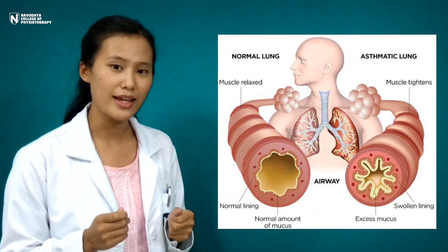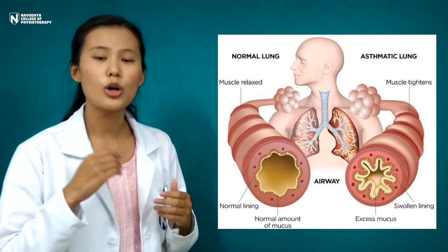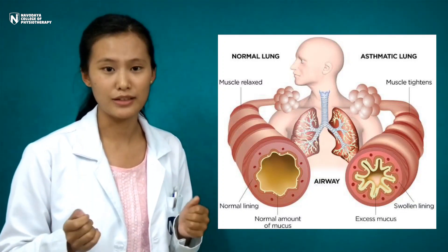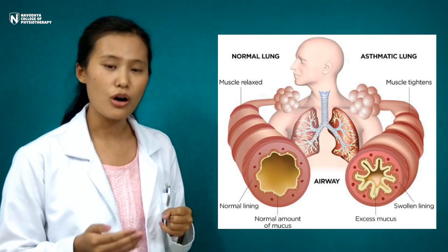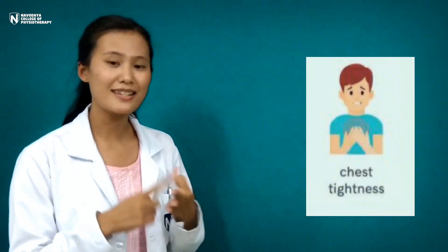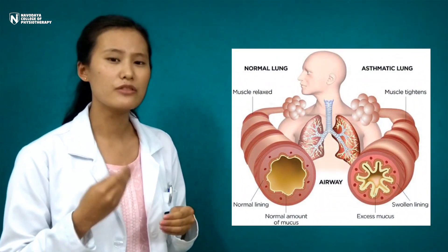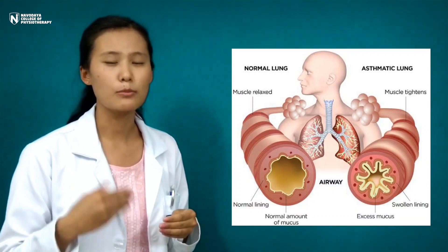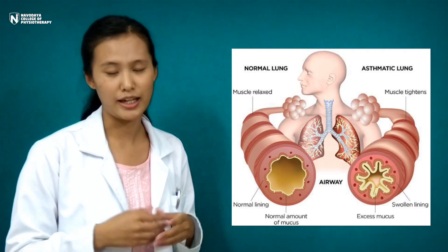Asthma is a chronic inflammatory condition of the airways in which we can see hyperresponsiveness of our airways to a wide range of stimuli that leads to bronchial inflammation. It is associated with recurrent episodes of cough, wheezing, chest tightness and breathlessness that are often worse at night or in early morning. The airflow limitation is often reversible with treatment, but in case of some chronic asthma the inflammation may be accompanied by an irreversible airflow limitation.